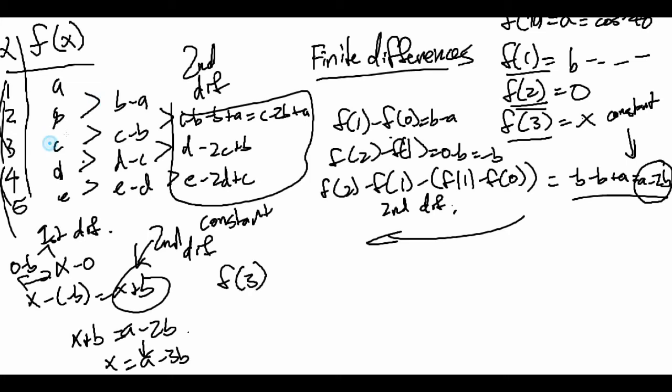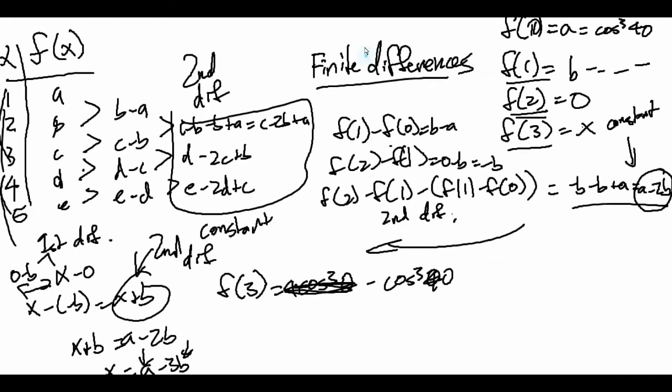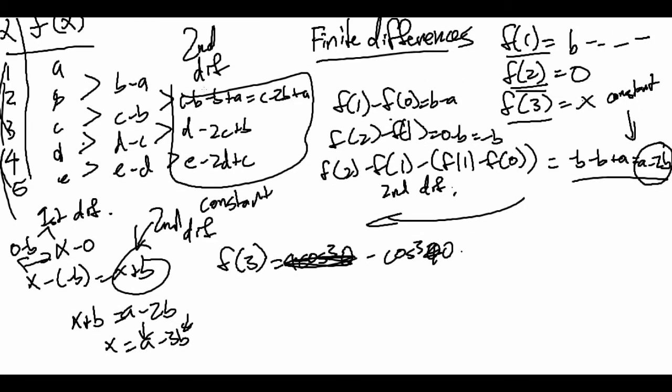Which means f of 3, if we substitute a and b in, f of 3 is equal to cosine to the third 40 minus 3 cosine 40 sine squared 40. Okay, we have this.